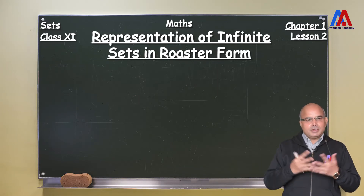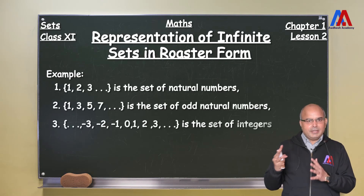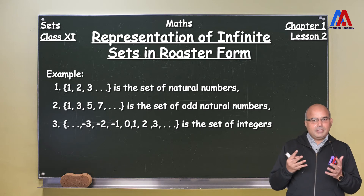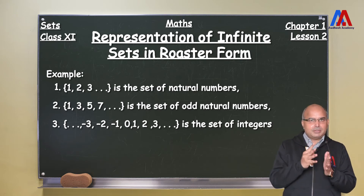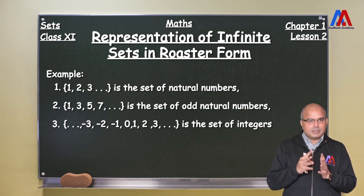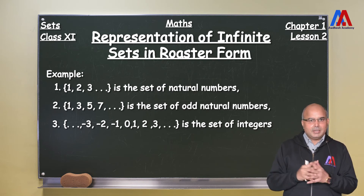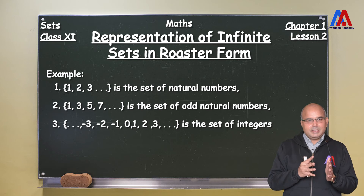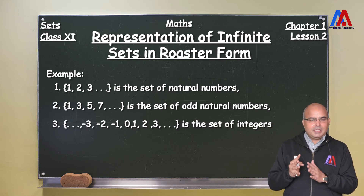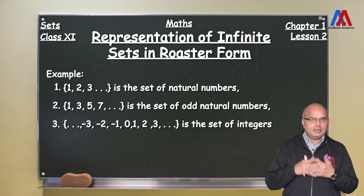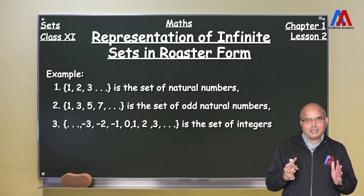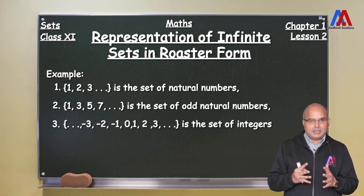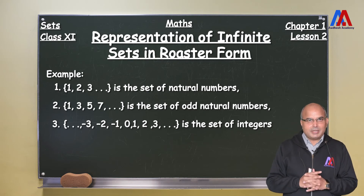But in most cases we can express infinite sets in roster form. For example, the set of natural numbers can be expressed as 1, 2, 3, ... . The set of odd natural numbers can be expressed as 1, 3, 5, 7, ... . In the same way, the set of integers can be expressed as ..., -3, -2, -1, 0, 1, 2, 3, ... with three dots on both sides. So most infinite sets can be represented in roster form, but sometimes it may not be possible, as in the case of rational numbers.